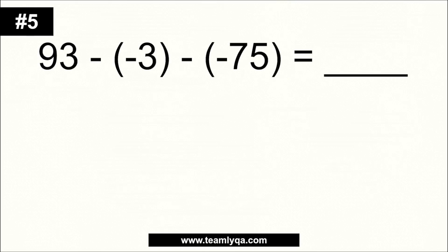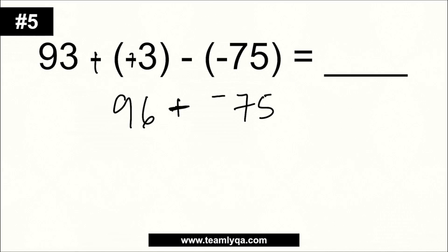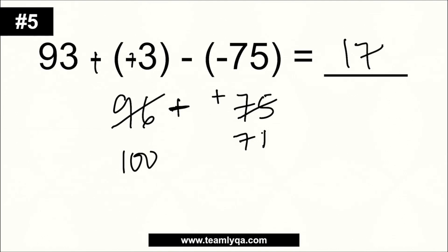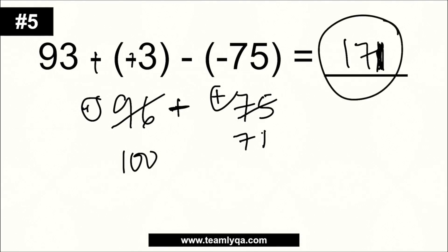Next, for number 5, we're dealing with multiple subtractions — just go from left to right. Starting with 93 minus negative 3: change the operation and the sign, so it becomes 93 plus 3, which is 96. Then, minus negative 75: change the operation and the sign, giving 96 plus 75. To complete it, make 75 into 100 by adding 25, then subtract 25 from 96 to get 71. So you have 96 plus 75 equals 171. Since they're both positive, the answer is positive 171, or just 171.